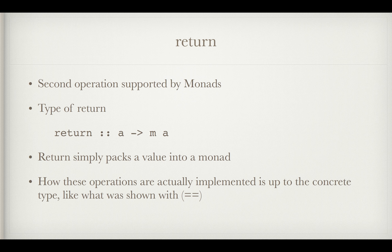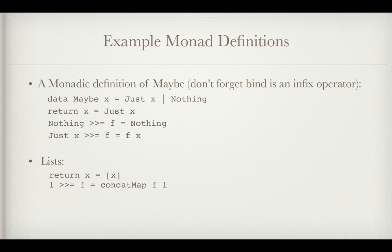So this is a bit abstract. Remember, we're only looking at the definition of these operators in the monad type class itself. So how these are actually implemented is up to the concrete type. Like what we're showing with double equals, we have a double equals for string and a double equals for a float or int and they're going to be different. They're going to be making kind of different sort of comparisons. So I have a couple of examples here to kind of illustrate this.